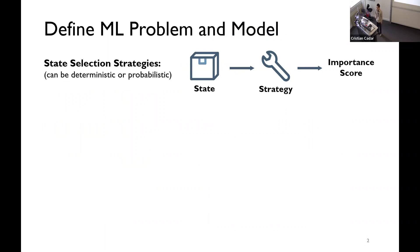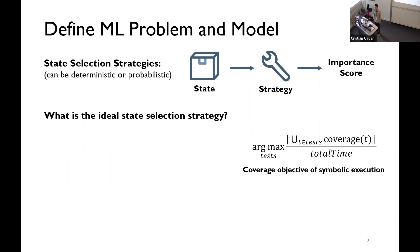We define the problem of state selection strategies as a mapping from a state to some importance score, measuring how important this state is for the goal of the symbolic execution. Before we actually present our own strategy, we want to ask the question, what is the ideal state selection strategy? That's the maximum we want to achieve. Let me list again the objective of symbolic execution. That's the coverage achieved divided by the number of time spent on execution.